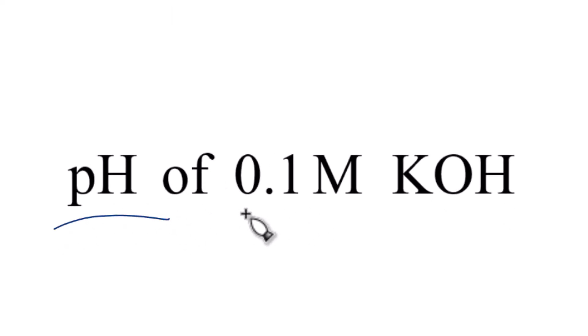Let's find the pH of a 0.1 molar solution of KOH. This is potassium hydroxide. So to do this, what you need to understand is that KOH is a strong base.